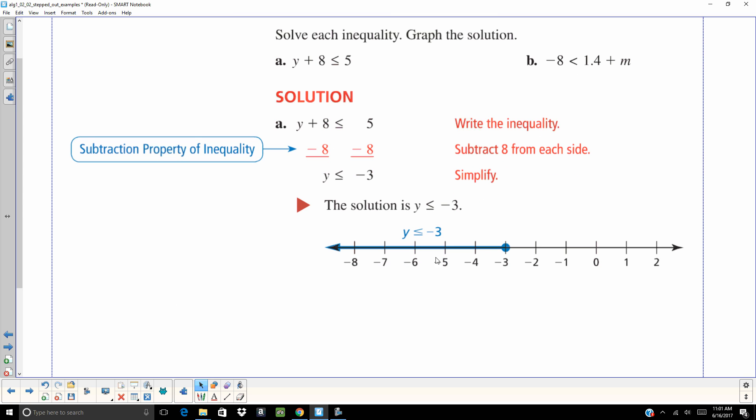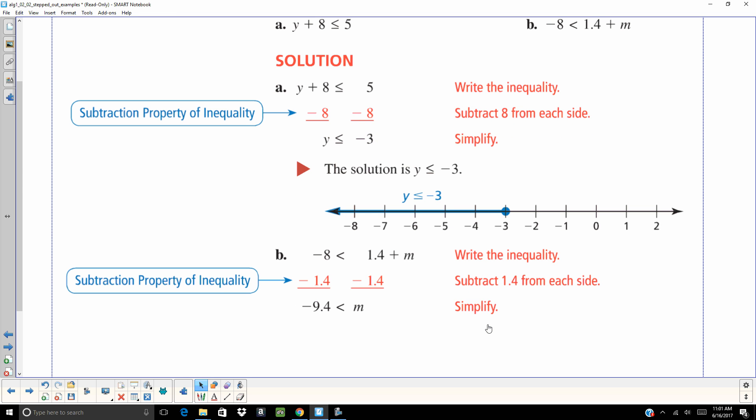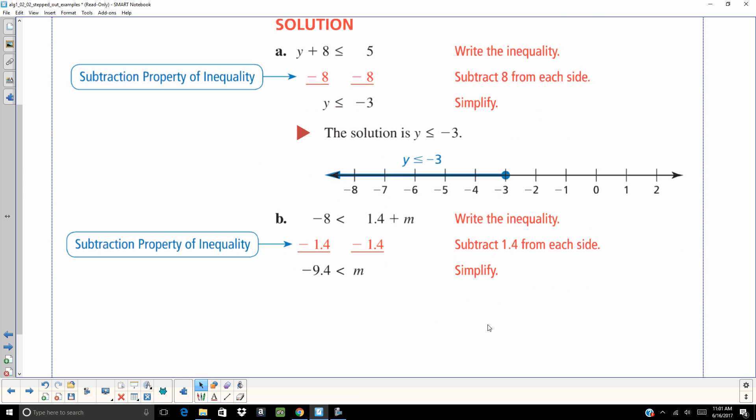On the next one, that negative 8 is less than 1.4 plus m. Well, 1.4 is positive and it's being added to the m, so I need to ask myself what can I do to get rid of that positive 1.4? Subtract it. I get negative 9.4.